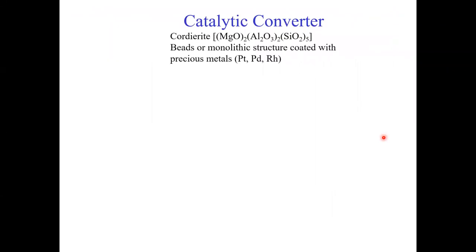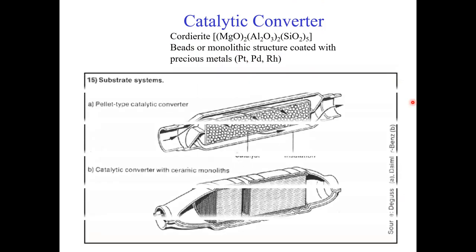A little bit about the catalytic converter in the car: it's actually made out of a ceramic material. You can make it in the form of beads or a monolith, and the surface area — whether beads or monolith — is covered by catalytic agents such as platinum, palladium, and rhodium. The beads are made of cordierite material that is packed into a porous structure through which exhaust gases flow and come in contact with the catalyst.